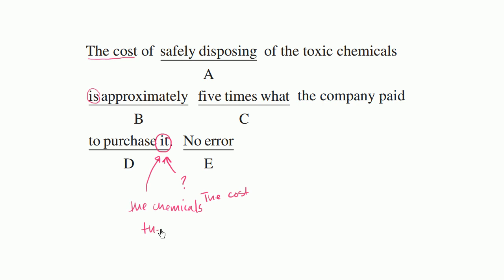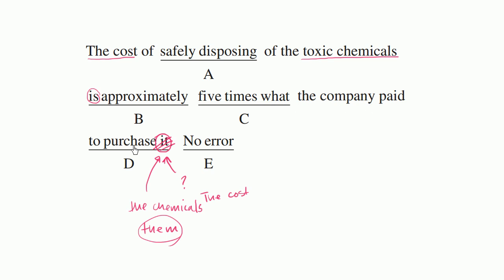You would use 'to purchase them.' You wouldn't use 'it' right over here. What did they purchase? They purchased the toxic chemicals — so it's plural. You would either say 'to purchase the chemicals' or 'to purchase them.' The cost of safely disposing of the toxic chemicals is approximately five times what the company paid to purchase them. Yeah, that makes a little bit more sense. Or if you want to be very clear, you could just write 'the chemicals' there.